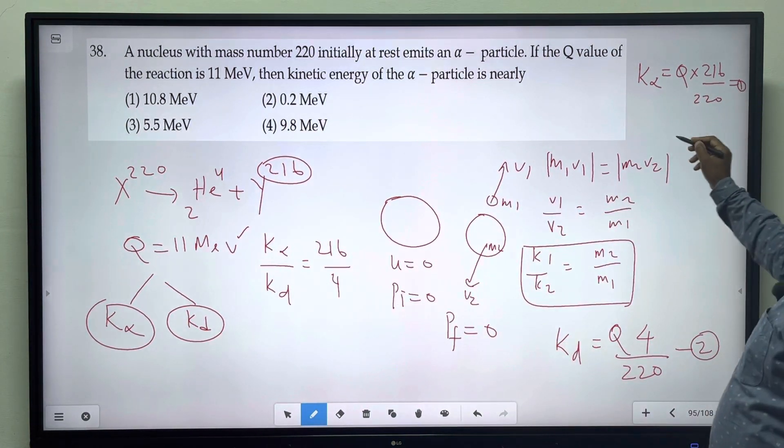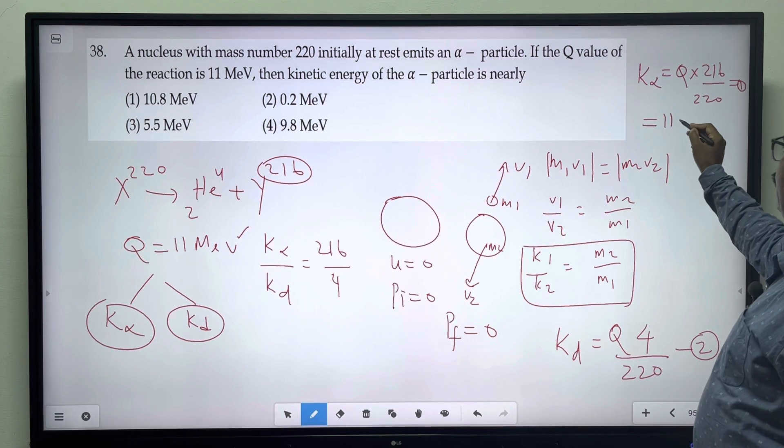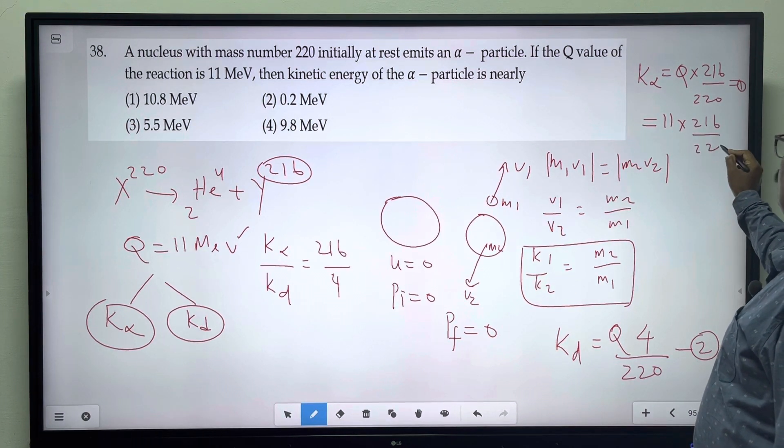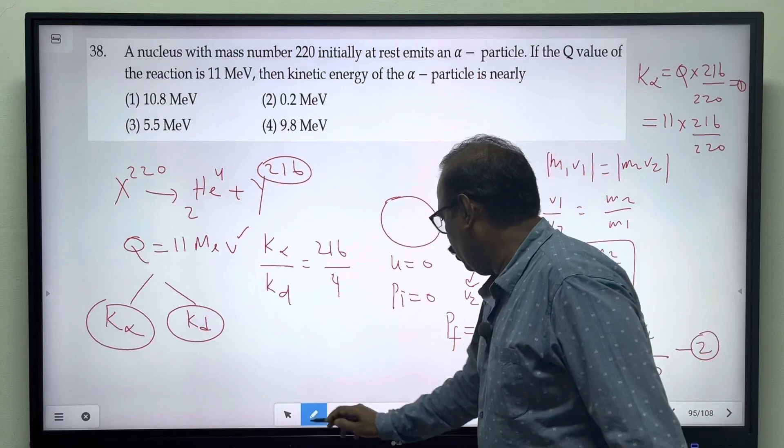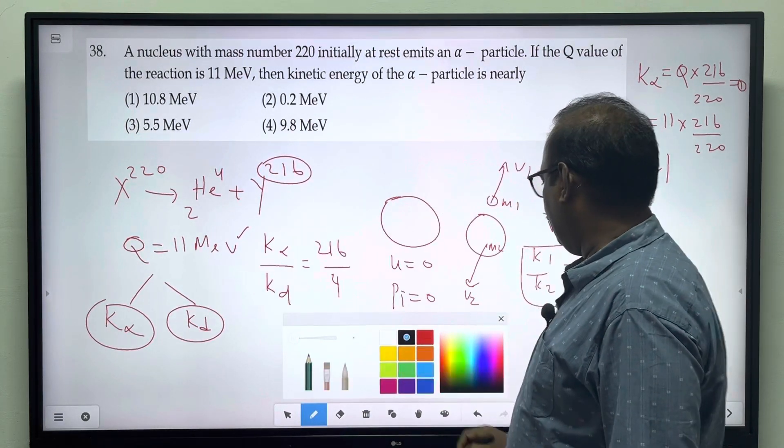Right. If you simplify, it is 11 into 216 by 220. So that is going to be the answer.